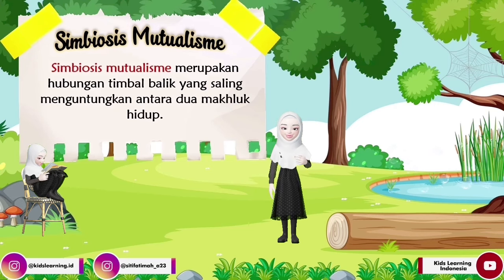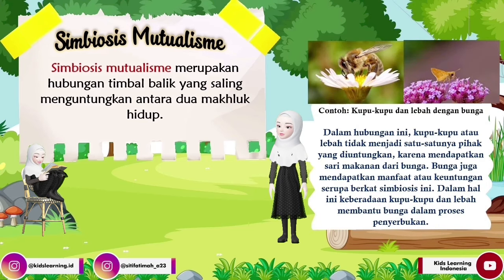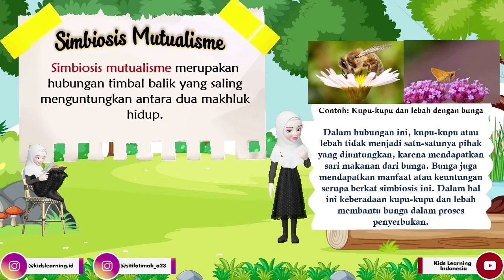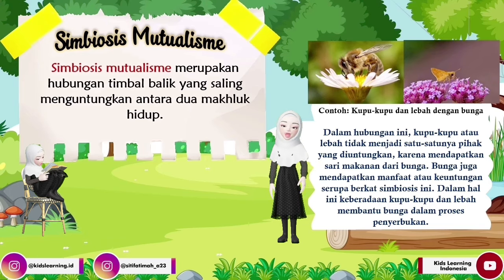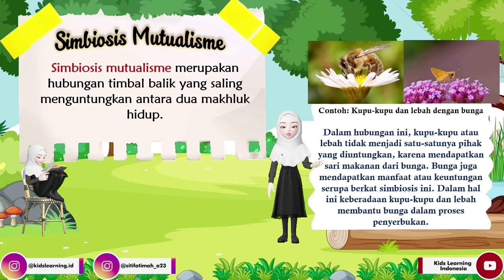Selanjutnya, contoh yang kedua yaitu kupu-kupu dan lebah dengan bunga. Dalam hubungan ini, kupu-kupu atau lebah tidak menjadi satu-satunya pihak yang diuntungkan karena mendapatkan makanan dari bunga. Bunga juga mendapatkan keuntungan serupa berkat simbiosis mutualisme ini. Keberadaan kupu-kupu dan lebah membantu bunga dalam proses penyerbukan.